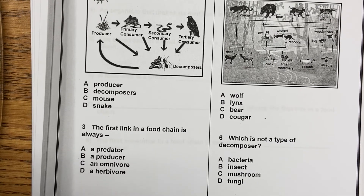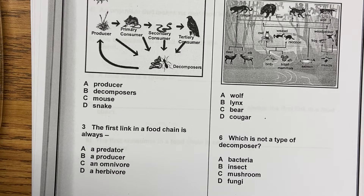Number three: The first link in a food chain is always — A, a predator; B, a producer; C, an omnivore; D, an herbivore. Remember to go back into the story to find these answers — they are directly stated.